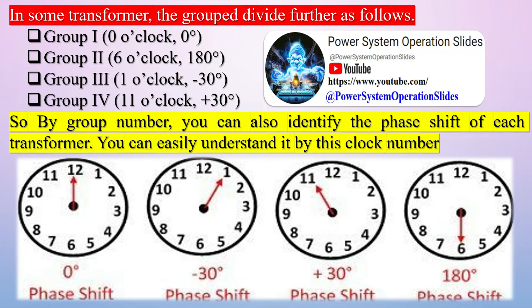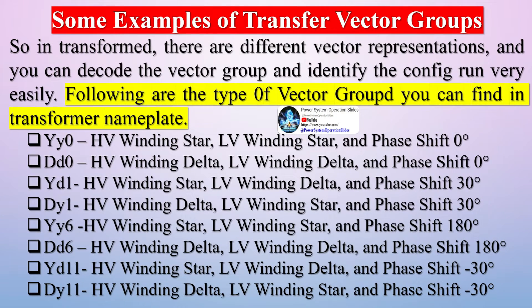In electrical engineering, a vector group, officially called a connection symbol, is the International Electrotechnical Commission IEC method of categorizing the high-voltage HV windings and low-voltage LV winding configurations of three-phase transformers.